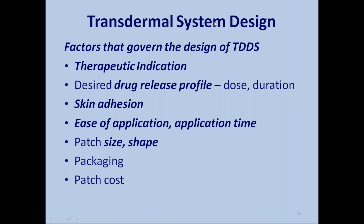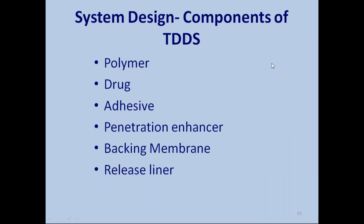So those are the features we need to consider. Moving to system design — what is a transdermal system composed of? Basically, it is composed of several components. One is the polymer, to control the rate. Another is the drug itself — a very important component. The other is the adhesive, which determines how well the patch adheres.